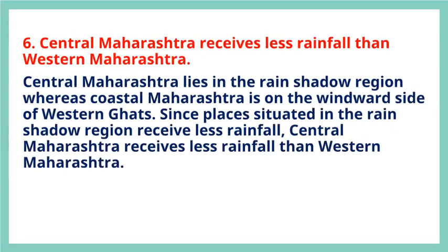Question 6: Central Maharashtra receives less rainfall than western Maharashtra. Central Maharashtra lies in the rain shadow region whereas coastal Maharashtra is on the windward side of the Western Ghats. Since places situated in the rain shadow region receive less rainfall, central Maharashtra receives less rainfall than western Maharashtra.